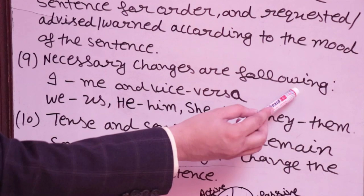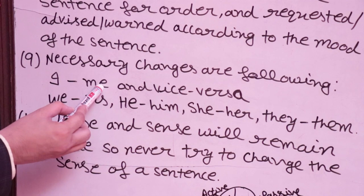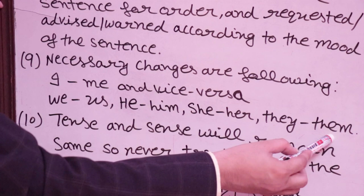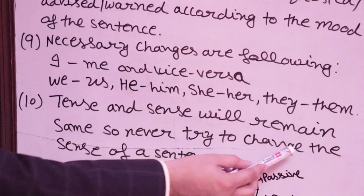Ninth rule: Necessary changes are made in pronouns. I changes into me and vice versa. We changes into us and vice versa. He changes into him, she changes into her, they changes into them and vice versa. Follow these pronoun rules carefully.